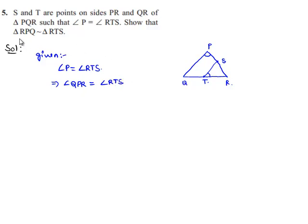Now he asked us to prove the similarity between triangle RPQ and triangle RTS. So let us consider them. In both triangles, angle QPR is equal to angle RTS. It is given.